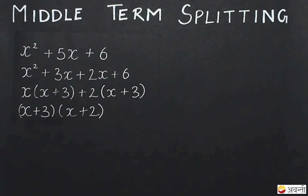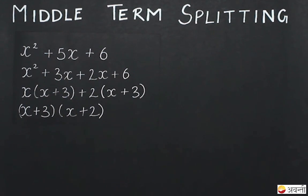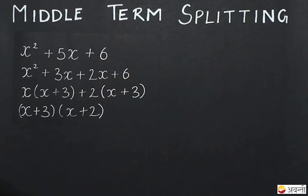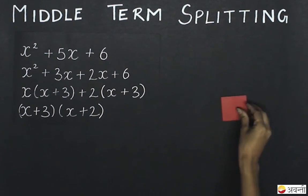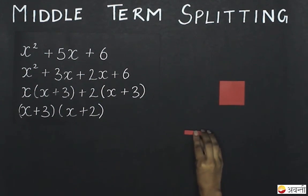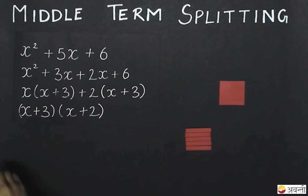Similarly, we can also visualize x squared plus 5x plus 6. Again, for representing x squared, I will use a square the side of which is x. For 5x, I will use 5 such strips. And for representing 6, I will use 6 square units.